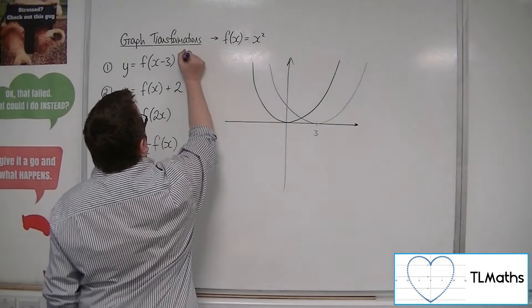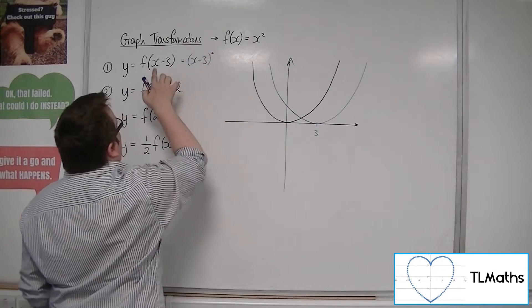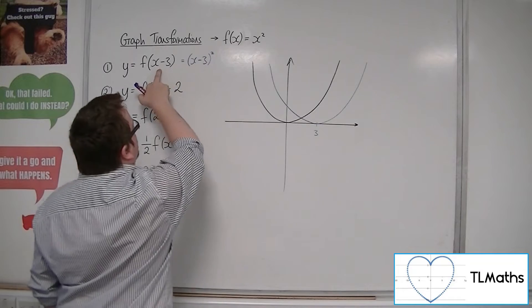Our equation would be x minus 3 squared. The x in the function has been replaced with x minus 3.